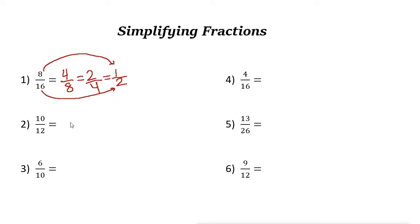Let's take a look at another example. These two are even numbers, 10 and 12. If you divide them by 2, 10 divided by 2 is 5, and 12 divided by 2 is 6. 5 over 6 equals 10 over 12.